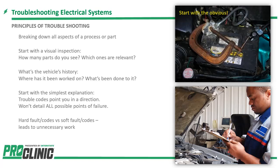Start with the simplest things — look at the trouble codes. They'll get you pointed in a direction, but they won't always point you to the failure. A P303 code tells us it's a misfire, but what caused the misfire? You can use trouble codes as a starting direction, hard fault or soft fault codes, but we want to make sure we get this car fixed right the first time. It leads back to getting the history and information up front before you get started. A little Sherlock Holmes work.